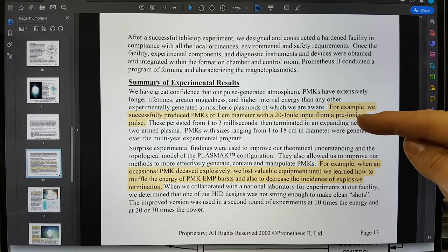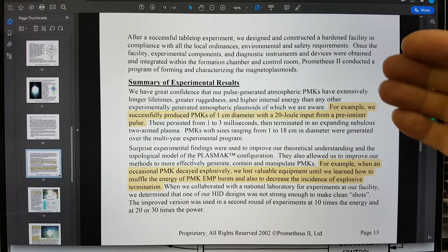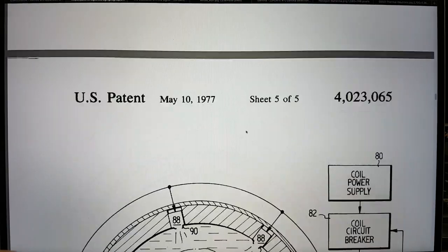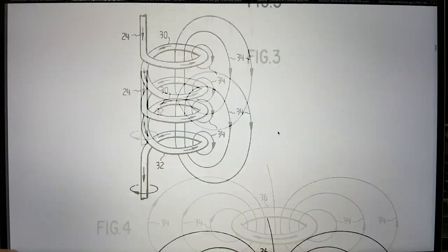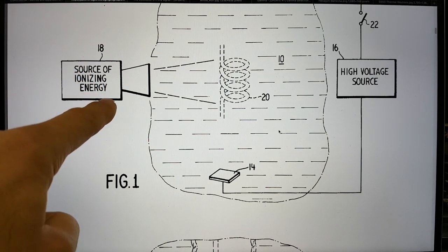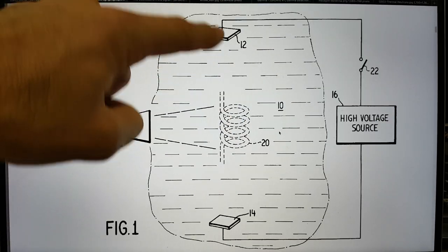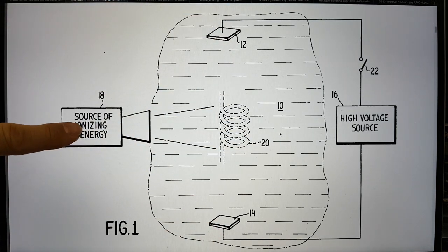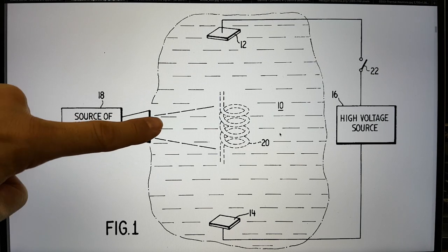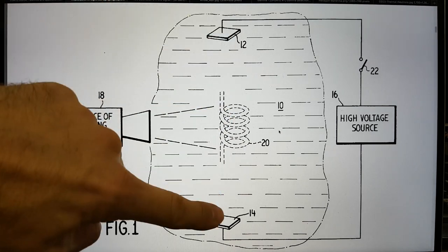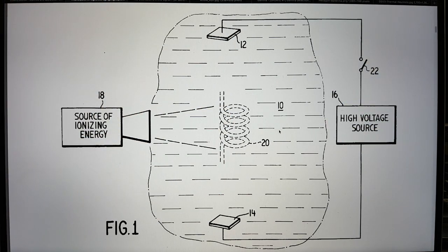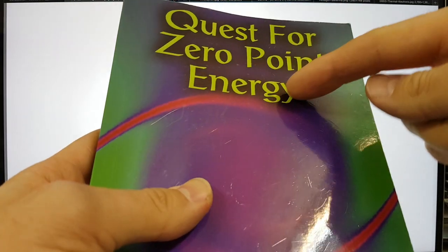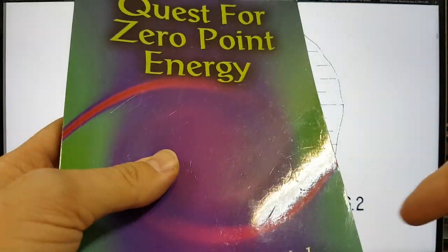For example, we successfully produced plasmacs of one centimeter diameter with a 20 joule input from a pre-ionizer pulse. Now I will go into the importance of the pre-ionization here with respect to the work of Shishkin, which I want to come on to. But explaining that it's not just a case of ionizing to plasma, there's something else more interesting going on.